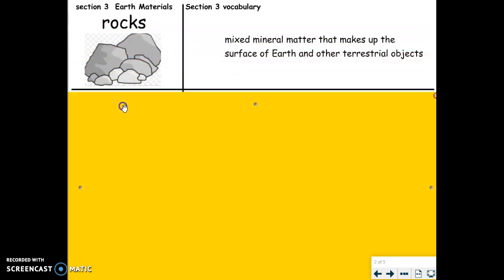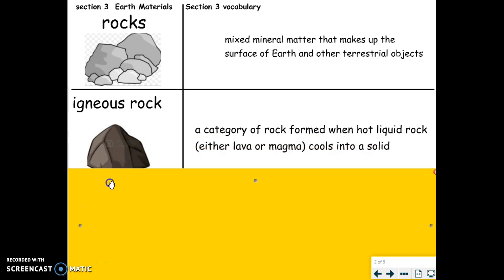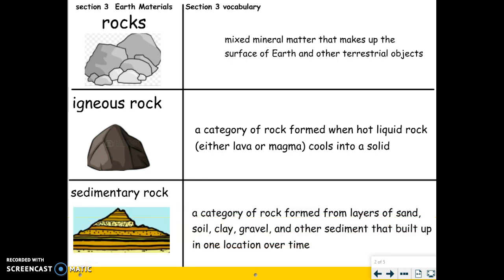Rocks: mixed mineral matter that makes up the surface of Earth and other terrestrial objects. Igneous rock: a category of rock formed when hot liquid rock, either lava or magma, cools into a solid. Sedimentary rock: a category of rock formed from layers of sand, soil, clay, gravel, and other sediment that built up in one location over time.